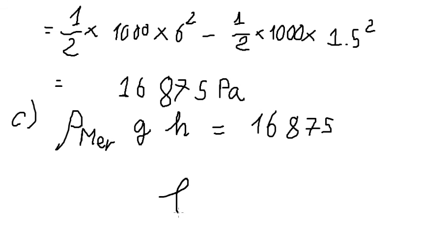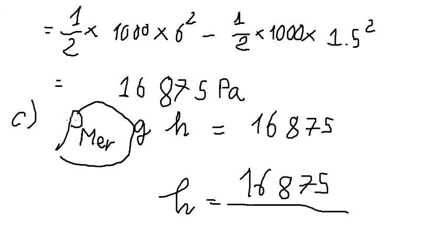So the height we can find here. We divide by density of mercury and g is about gravitational force. So we will got about, that's about 13,600 multiplied with 9.8.